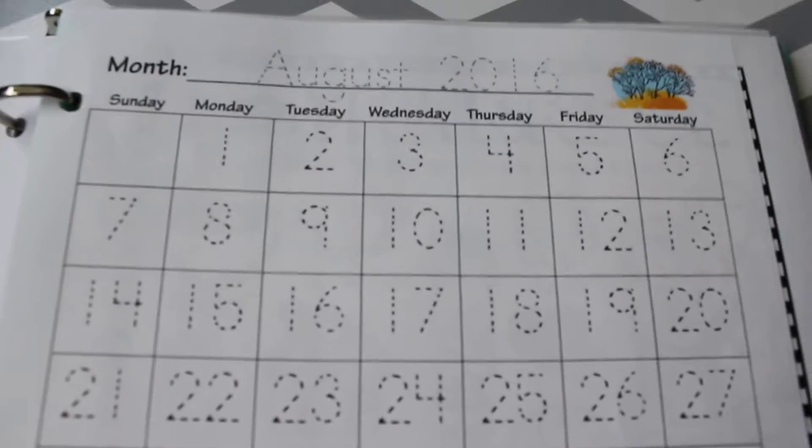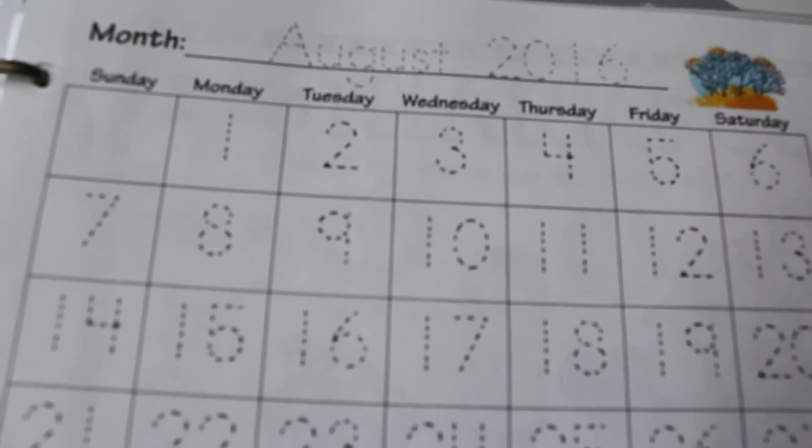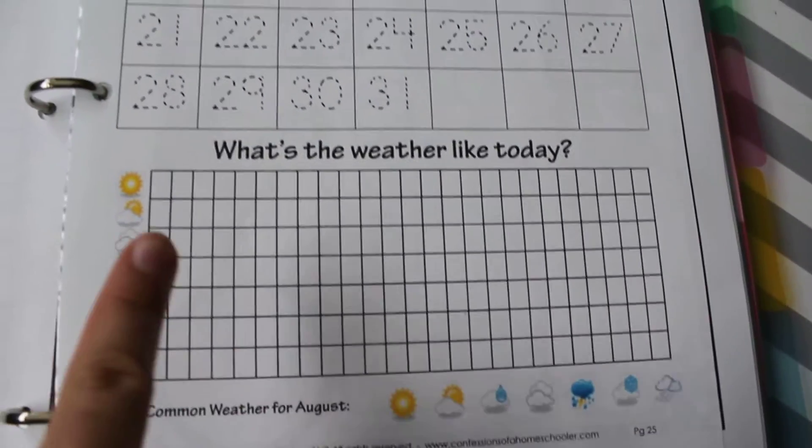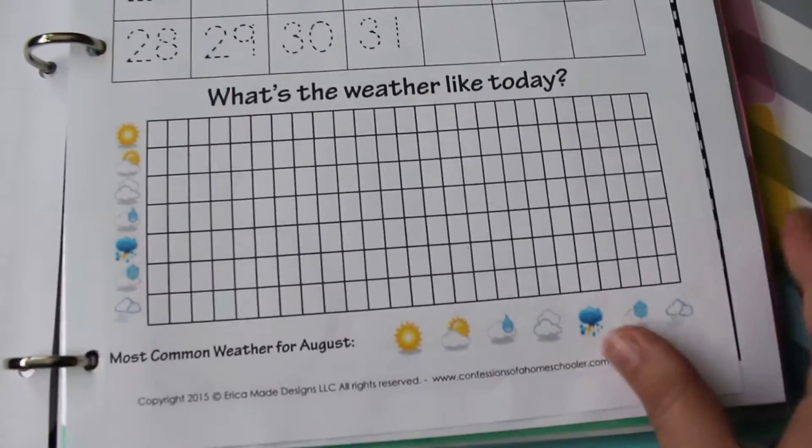This is just a calendar page. Each month I'll switch it out so they'll just copy the month August 2016 and then each day they'll copy the day, so 24, 25, whatever, and then fill in the weather, what's the weather like today. They'll just graph it for whatever the weather is and then we'll fill out the most common weather for the month.